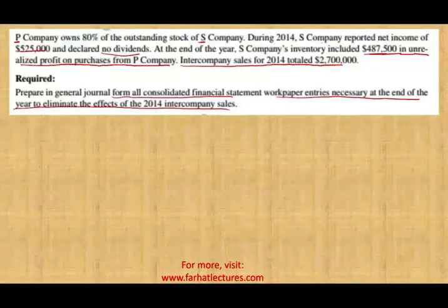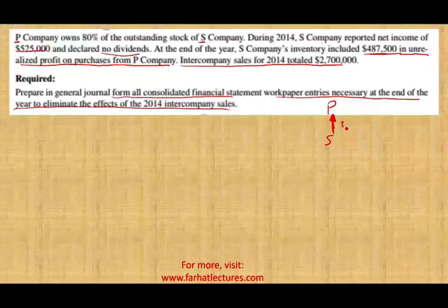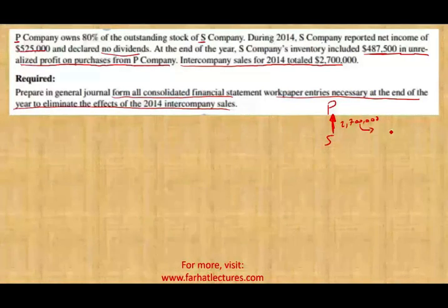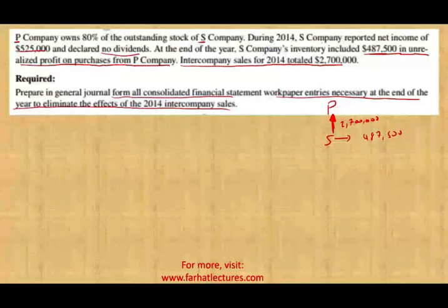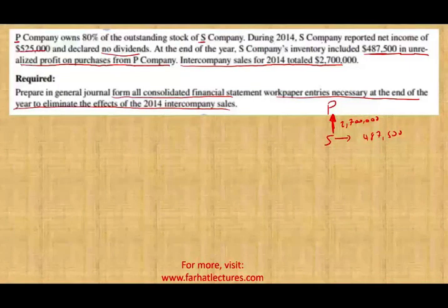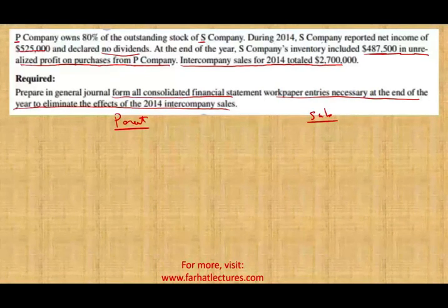Basically, what we are saying is this: we have P Company — the parent company — and we have the subsidiary. What happened is the subsidiary sold to the parent company — they sold them 2.7 million worth of merchandise — of which S Company still has 487 of profit as a result of sales to the parent. So S is selling to P. The best way to illustrate this is to see the journal entry both on the sub and on the parent company.